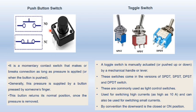Next, we have a push button switch. In the symbol, NO means normally open — the switch is not pressed yet — but when you press the switch, it is in the normally closed position. It is a momentary contact switch; you press it for just a moment and that makes or breaks the connection as long as the pressure is applied. As long as you hold the switch, it will make the contact and be in the normally closed position, and as soon as you release the switch, it will come to the normal, normally open position. Generally, this pressure is supplied by a button or by someone's finger. The button returns to its normal position once the pressure is removed.